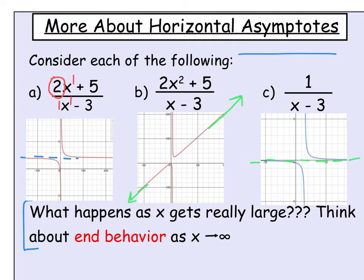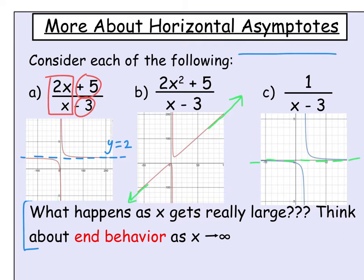In example A, since the degrees are equal, the leading coefficients are 2x over 1x, giving a ratio of 2 to 1, which equals 2. So the horizontal asymptote is y equals 2. As x gets really large, the plus 5 and minus 3 become insignificant — the function essentially becomes 2x over x, which simplifies to 2. The y-values approach 2 in both directions but never quite reach it.